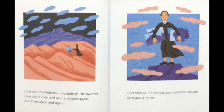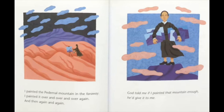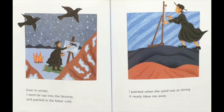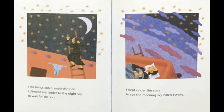'God told me if I painted that mountain enough, he'd give it to me. I drove my Model A across the desert and back and up and down over the hills. I painted in my studio on wheels until the afternoon bees chased me home. Even in winter, I went far out into the far away and painted in the bitter cold. I painted when the wind was so strong it nearly blew me away. I did things other people don't do. I climbed my ladder into the night sky to wait for the sun. I slept under the stars to see the morning sky when I woke up. I stayed in the desert.'